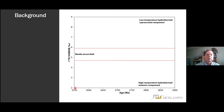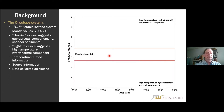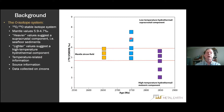When we look at the oxygen system, we talk in terms of delta-18 oxygen compared to standard mean ocean water, expressed in per mil. The mantle zircon field ranges from 4.7 to 5.9. Heavier values with higher numbers on the scale suggest a supercrustal component — in other words, low-temperature hydrothermal processes. The lighter values suggest a high-temperature hydrothermal component. All this data is collected on zircons.